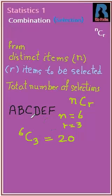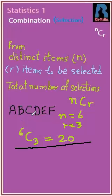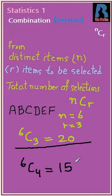Similarly, if we are to take four letters from these six different letters, we calculate 6C4, and this gives us the total number of selections. That means 15 selections are possible if we need four letters from these six letters.